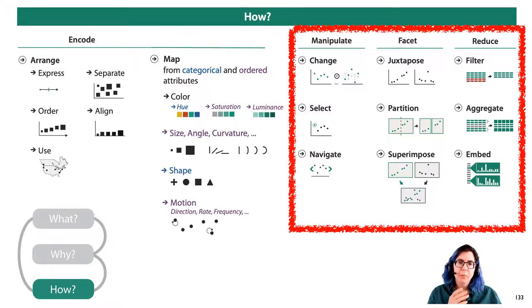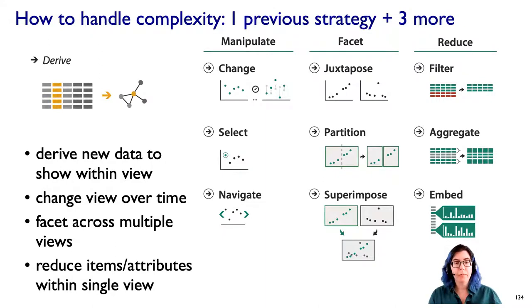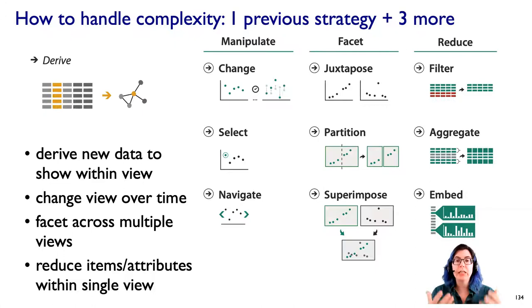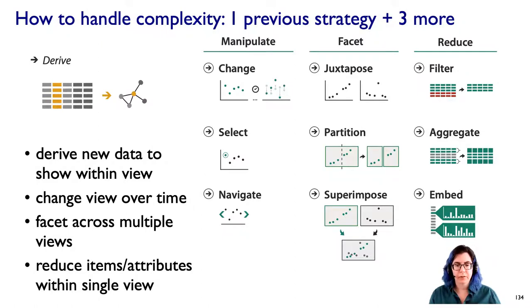What's going on here is that we have four major strategies to handle complexity. We've already talked about one of them, which is deriving new data. The other three are the major families of interactivity: changing a view over time, using multiple views and how we facet between them, and within a single view how to reduce the number of items or attributes to show. And that's what we're going to launch into now.